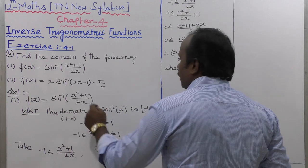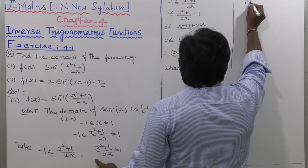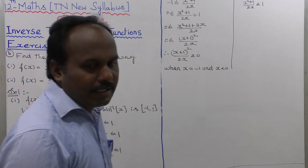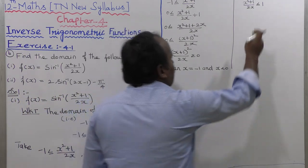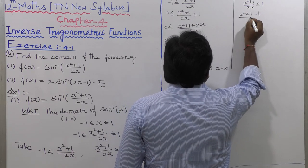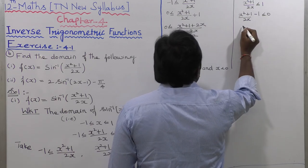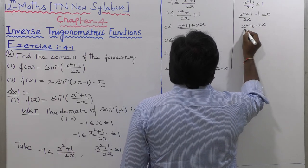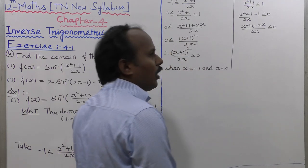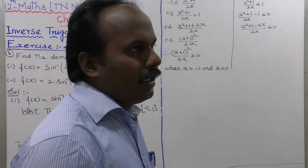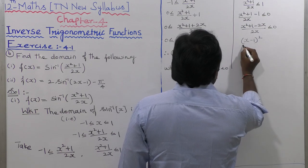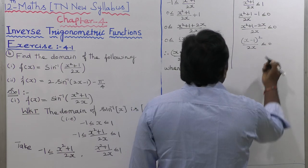Taking the second condition: (x squared plus 1) divided by 2x is less than or equal to 1. Moving 1 to the left side: (x squared plus 1 minus 2x) divided by 2x less than or equal to 0. The numerator x squared minus 2x plus 1 equals (x minus 1) whole squared. So (x minus 1) squared divided by 2x is less than or equal to 0.